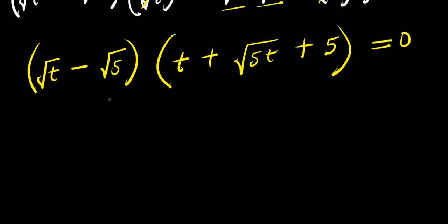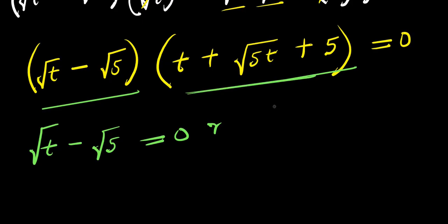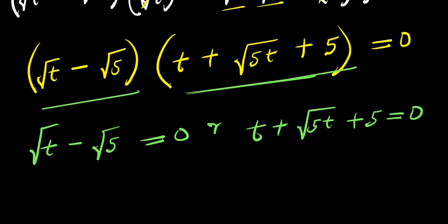Now we equate each factor to zero. We have √t − √5 = 0, or t + √(5t) + 5 = 0.